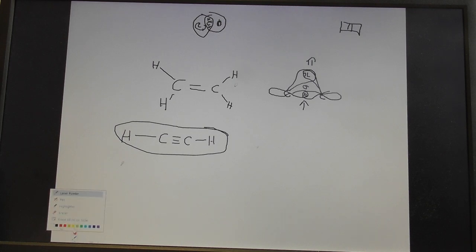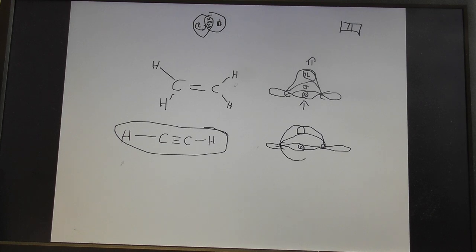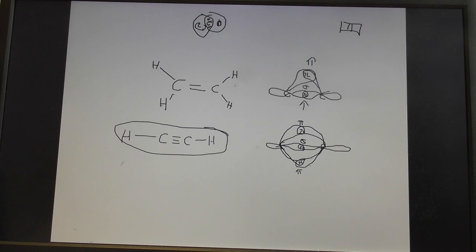Now moving on to alkynes: a triple bond consists of one sigma bond and two pi bonds. You always have a sigma bond first — that's the head-on overlap. Then the first pi bond is side-on overlapping of p orbitals, and the second pi bond is also side-on overlapping of p orbitals. So triple bonds are made out of one sigma bond and two pi bonds.